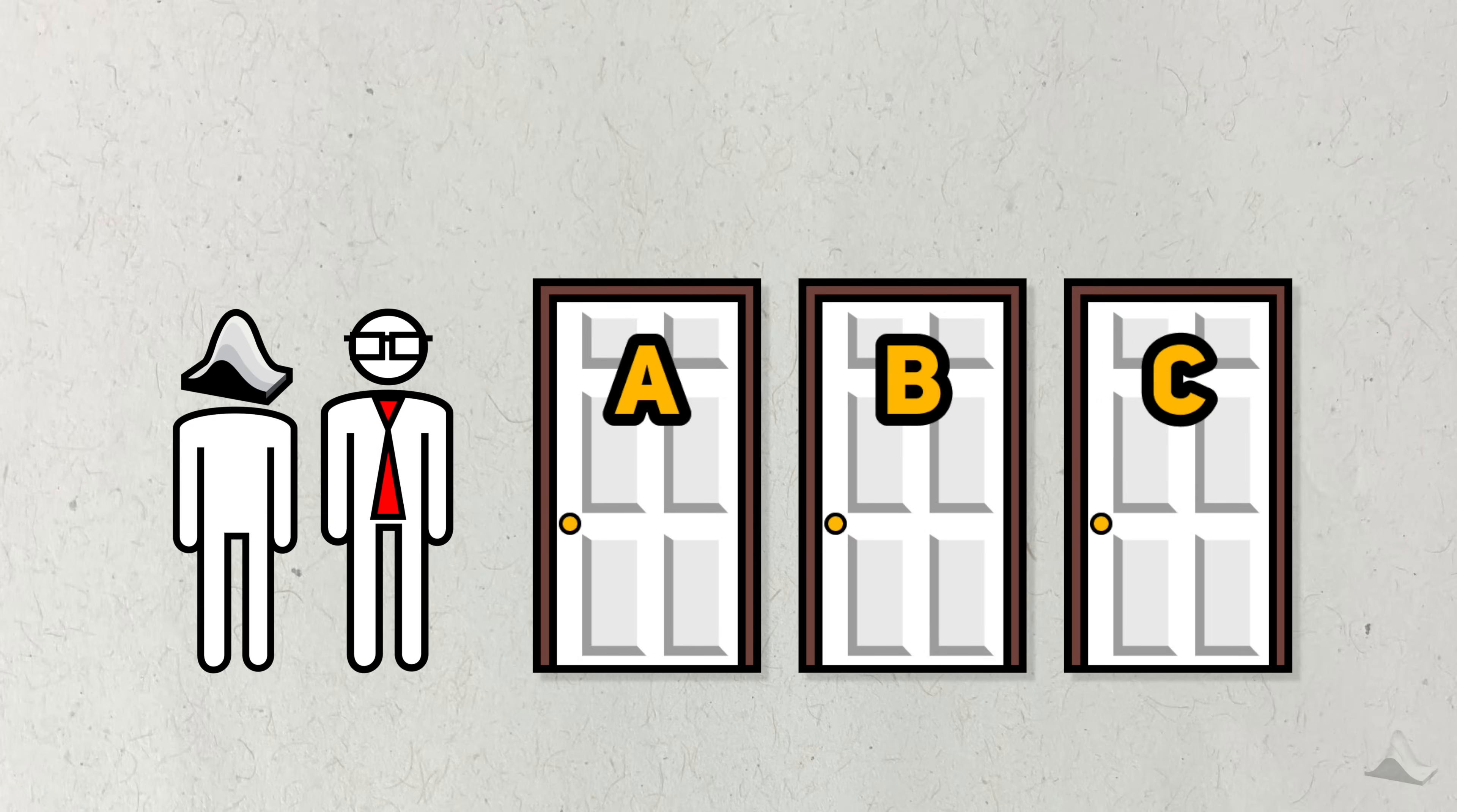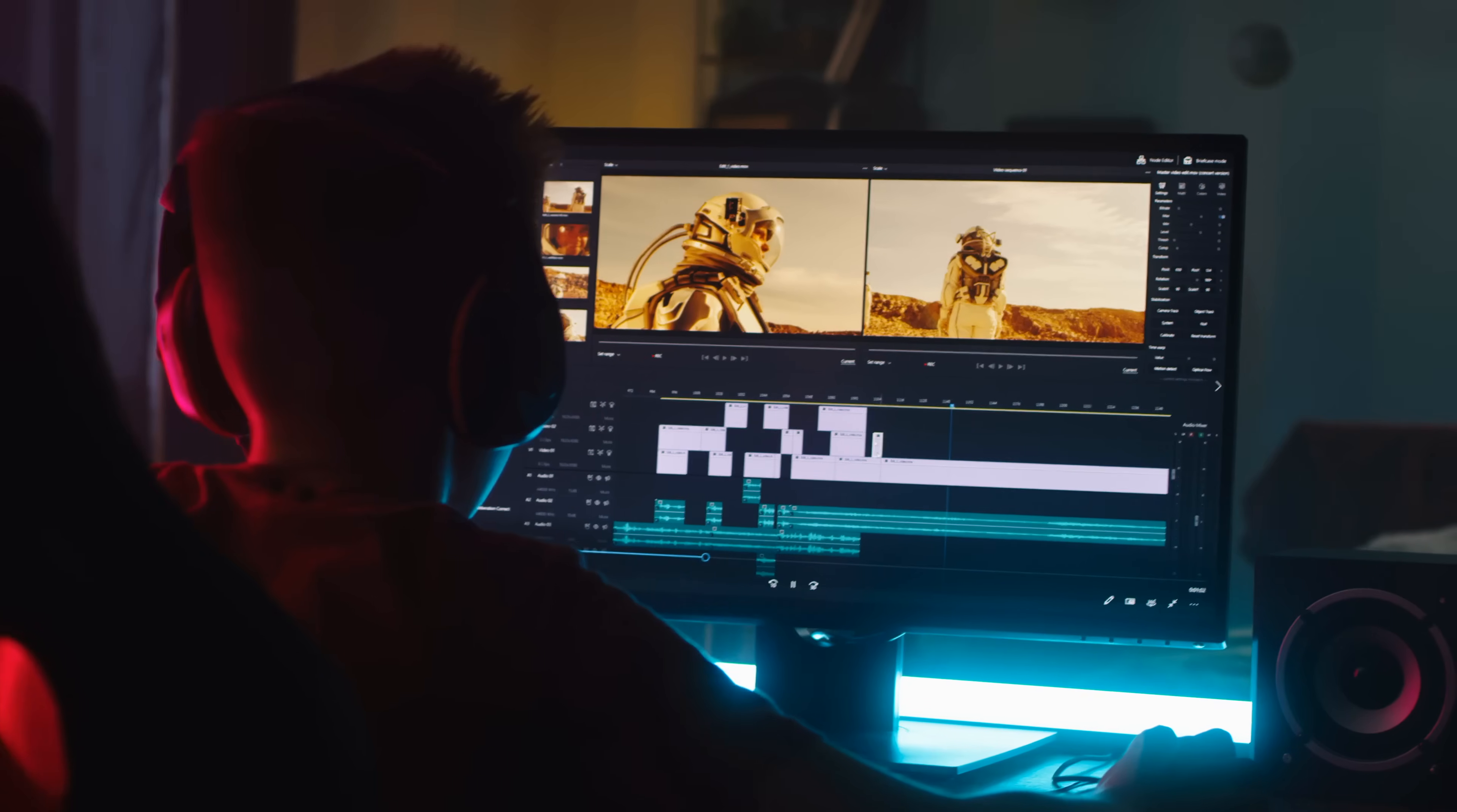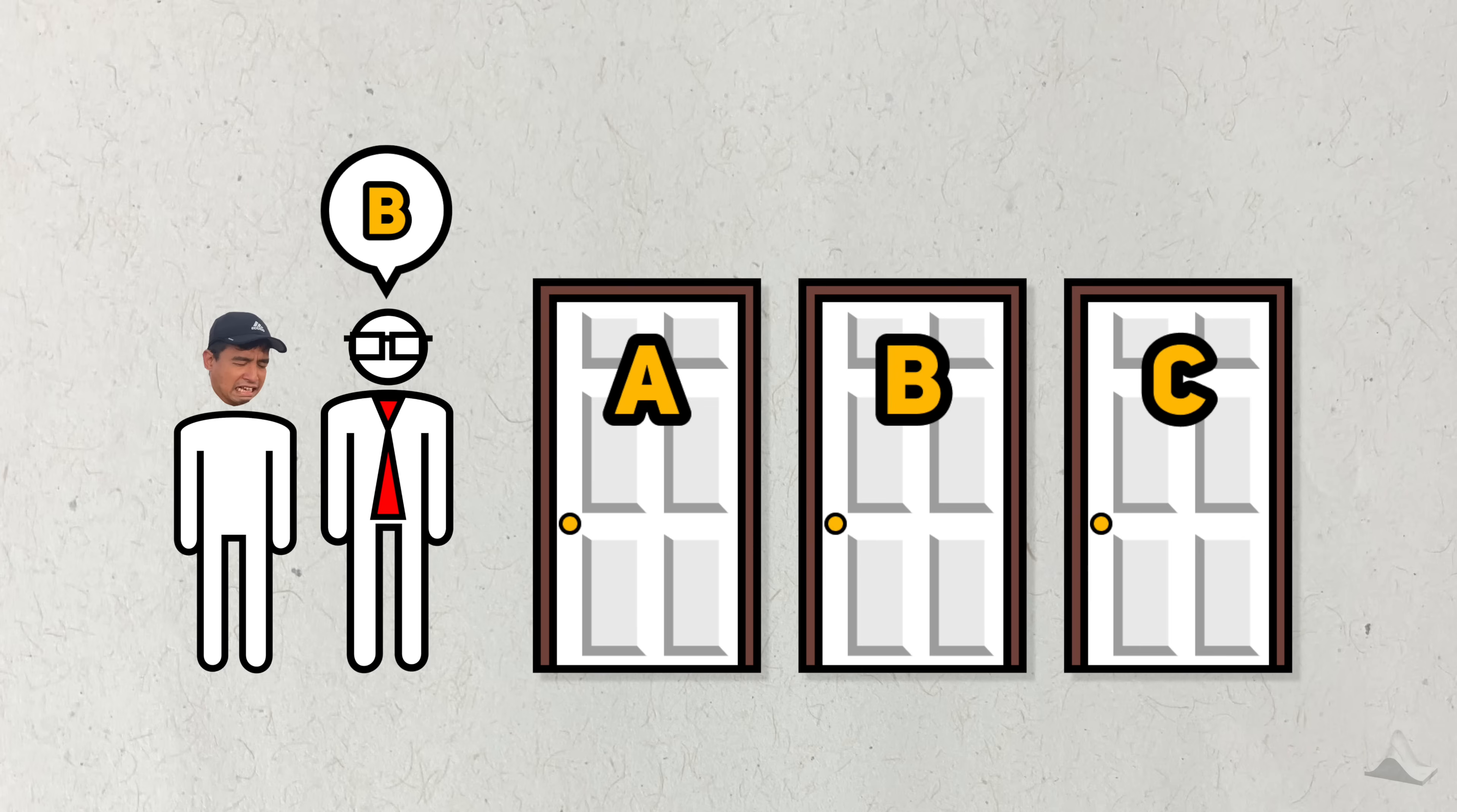Let's do another Monty Hall problem with a twist. Everything about the original problem stays the same, but now we have a different host. And you actually know something about this new host. The new host's name is Chris. He's a good person and he really means the best, but he's just not very good at his job. His one responsibility is to remember which door has the prize behind it and react to the player accordingly. But he has a terrible memory, probably from too many late nights of editing.